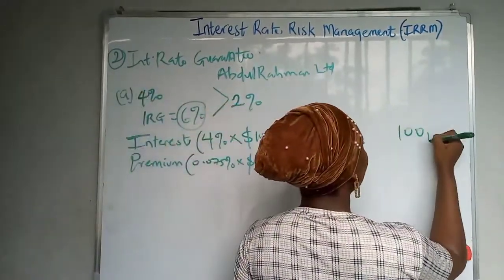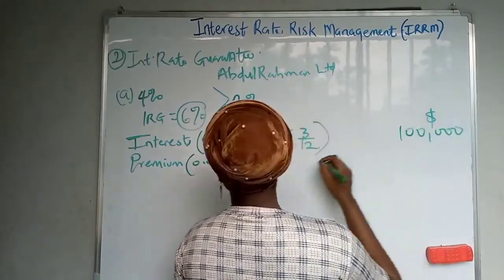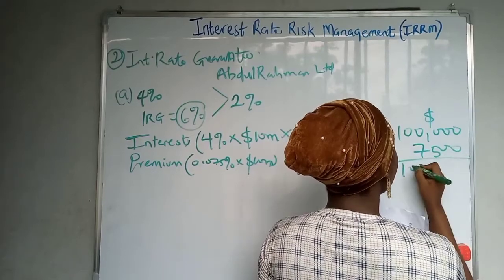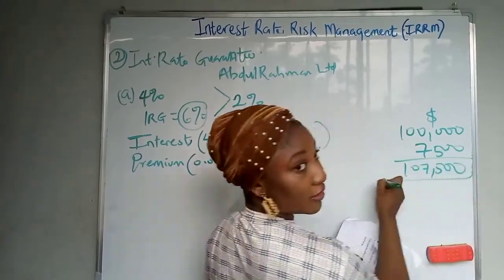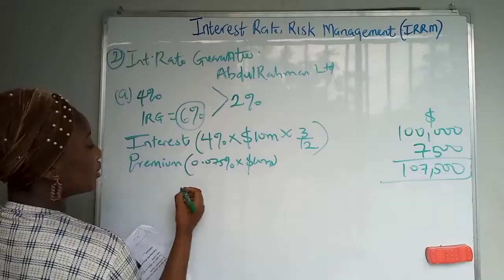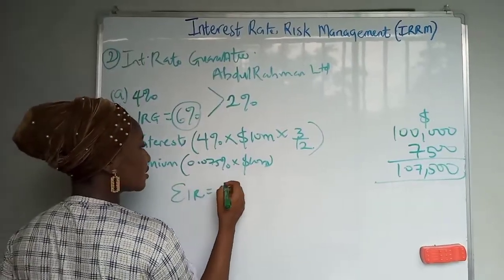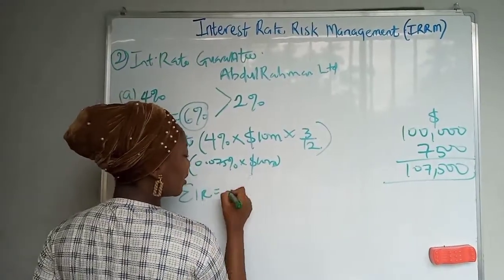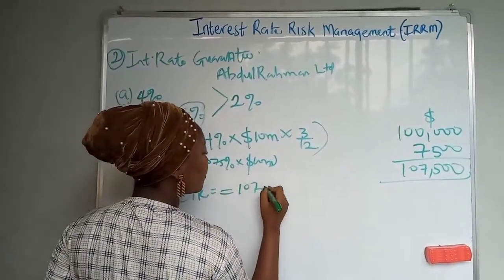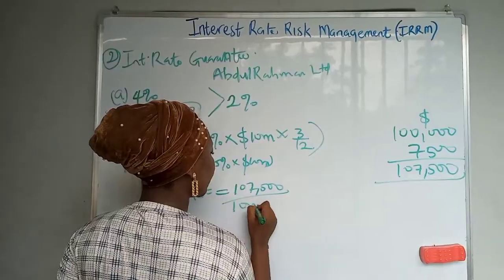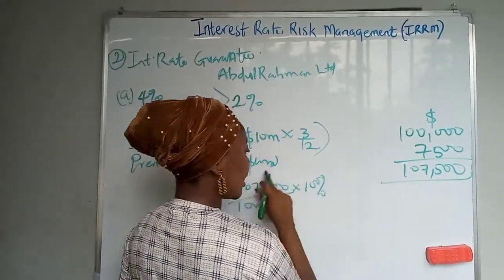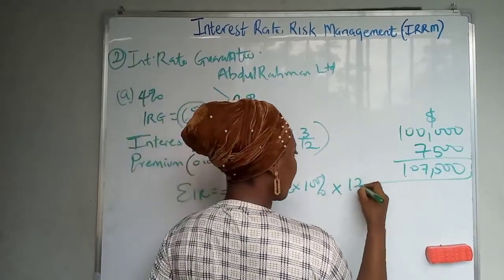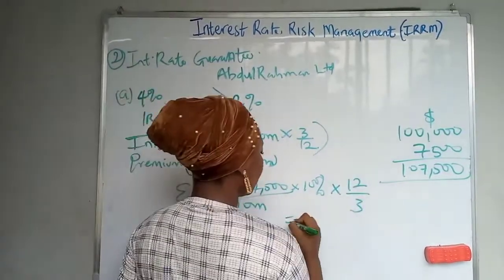The interest at four percent for three months gives 100,000 dollars, and the premium gives 7,500 dollars, totaling 107,500 dollars. The effective interest rate is 107,500 divided by 10 million, multiplied by 100 percent, annualized by 12 over 3, giving 4.3 percent.